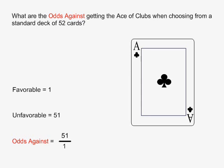Odds against is equal to unfavorable over favorable, which in this case is equal to 51 over 1.